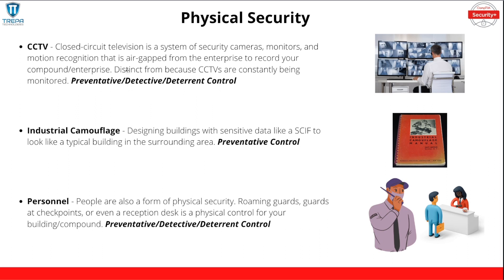Industrial camouflage is designing buildings with sensitive data — like a SCIF or government work — to look like a typical building and blend in with the surrounding area. Imagine you're in a downtown area, you see a bunch of offices, and you don't know that behind that lawyer's office is actually a top secret SCIF. That's industrial camouflage. Personnel — people also form security. Having roaming guards and a visitor reception desk is part of your physical control to your compound. This is preventative, detective, and deterrent.